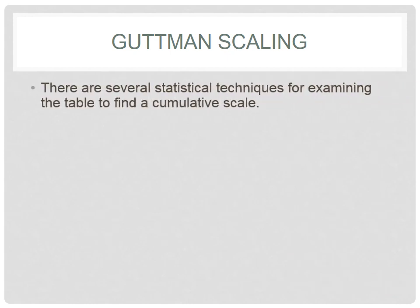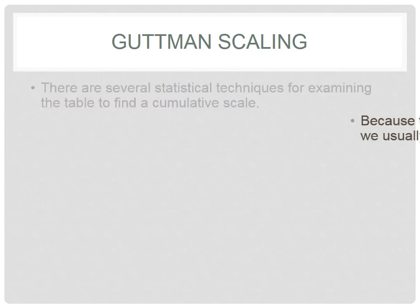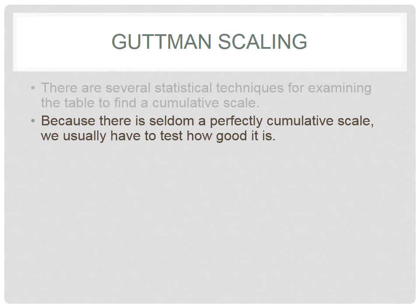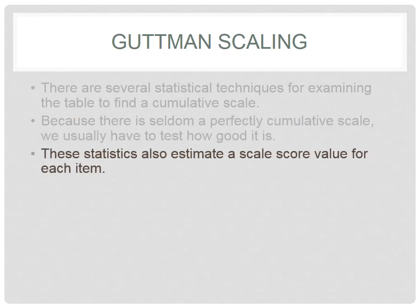There are several statistical techniques for examining the table in order to find a cumulative scale, though these are outside the scope of this current class. We also have to test how good the item fit is — that is, are people really agreeing to item one when they agree to item two, and item three if they agree to one and two. These are all things that have to be empirically validated, and these statistics help us estimate a scale value for each individual item.